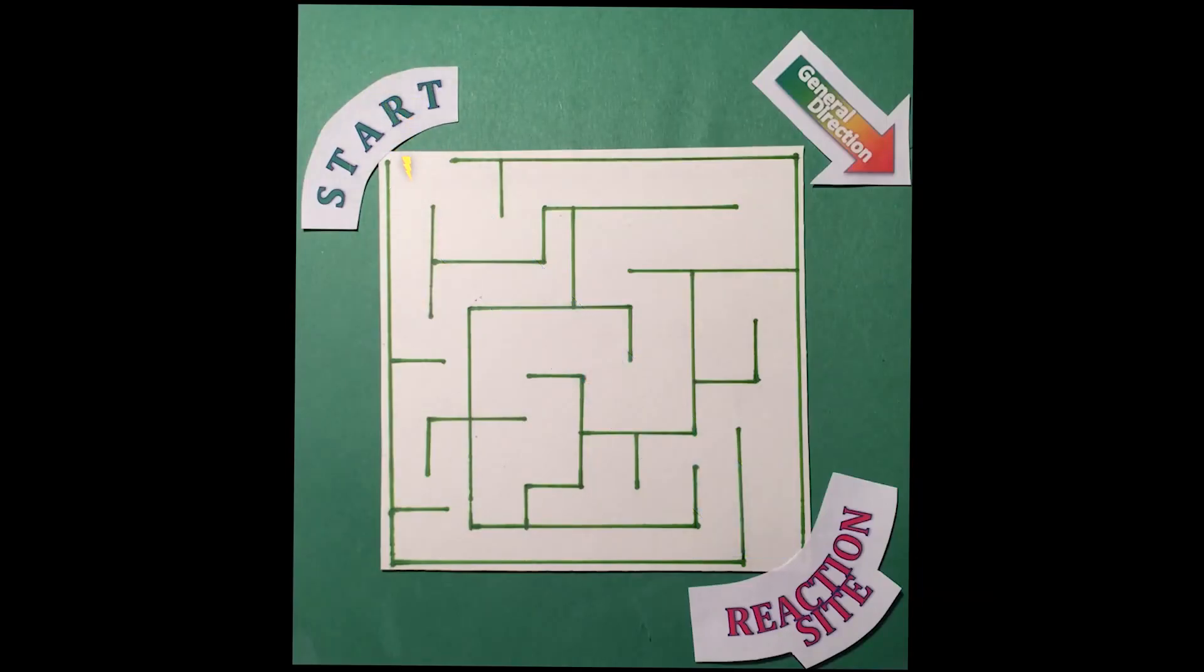Originally, we believed that this energy moved randomly between molecules towards the general direction of the reaction site. This is as if the energy stumbled, without a map, from one corner of a maze to the other.